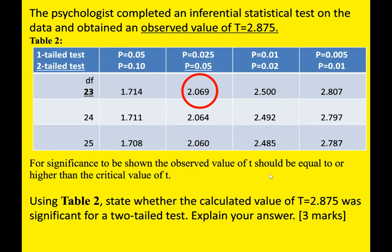This question has told you to select a two-tailed test, which I've underlined in the top left-hand corner. It doesn't specify a probability level, so our default in psychology is p = 0.05, meaning there's a five percent probability the results are due to chance. If you're not told which probability level to use, just go for 0.05. The degrees of freedom (df) here is 23, and I've put a red circle around our critical value of t, which is 2.069.